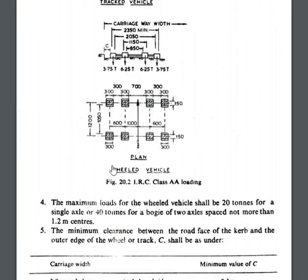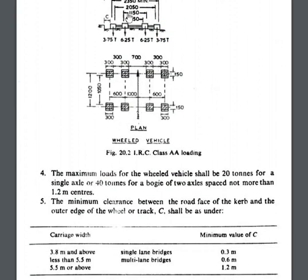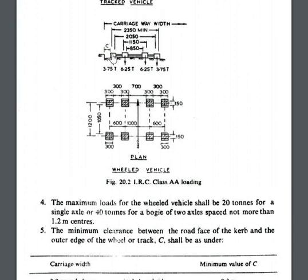Now for the wheeled vehicle — it has four heavy wheels. This is the elevation showing the distances between the wheels along the carriageway. This is the plan — the vehicle is moving in this direction. The tires impose load on the road: external wheels transfer 3.75 tons and internal wheels transfer 6.25 tons.